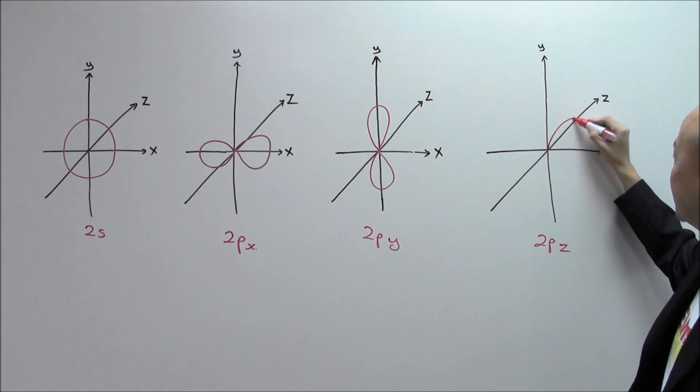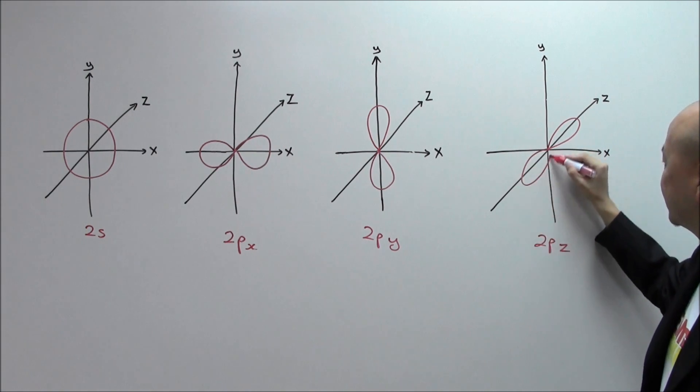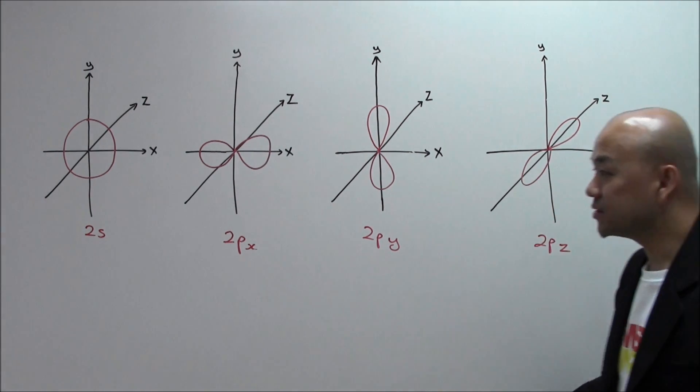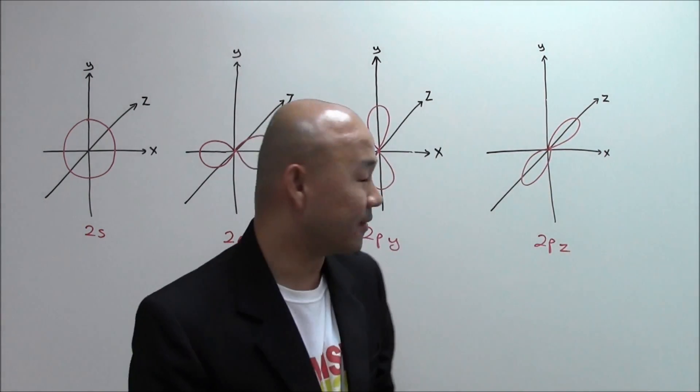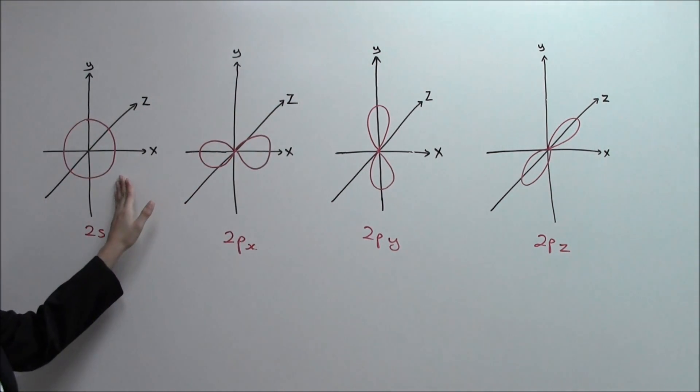Last but not least, your 2PZ orbitals, which must be aligned in the direction of the Z axis. So here you got it. The S orbital is spherical as you can see here.